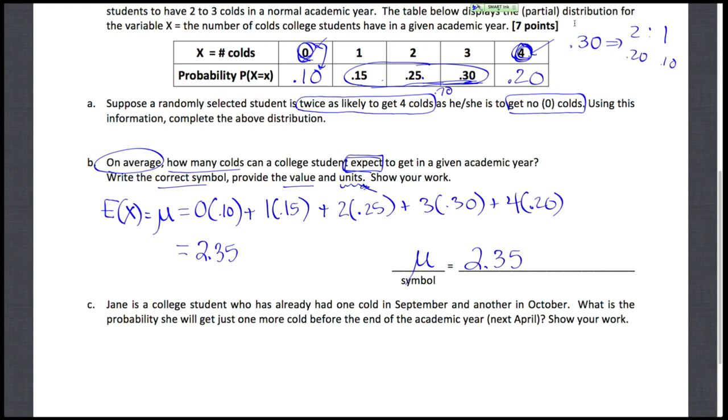So a little bit between 2 and 3, and I'm going to keep it as that 2.35. I'm not going to round it down to 2 or up to 3, because this is what you'd expect on average over many college students. And the units I don't want to forget and lose that point on my exam. So we're talking about 2.35 colds on average. And now we've got a particular college student, Jane.